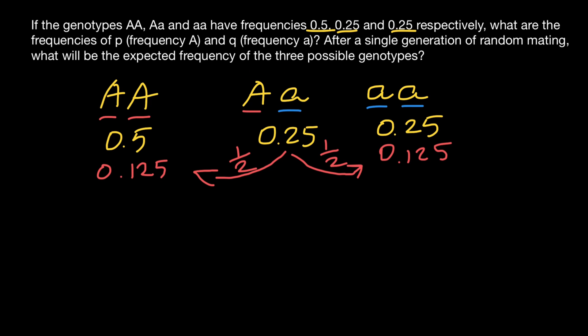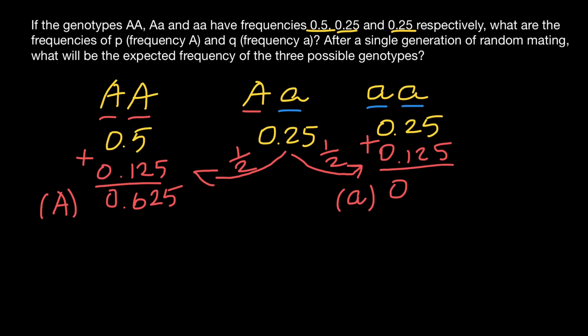So the frequency of the dominant allele A is going to be 0.625, and the frequency of the recessive allele A is going to be 0.375. We can also say that the frequency of the dominant allele A is 62.5%, and the frequency of the recessive allele A is 37.5%. We just multiply these numbers by 100 if we need an answer in percentage form.